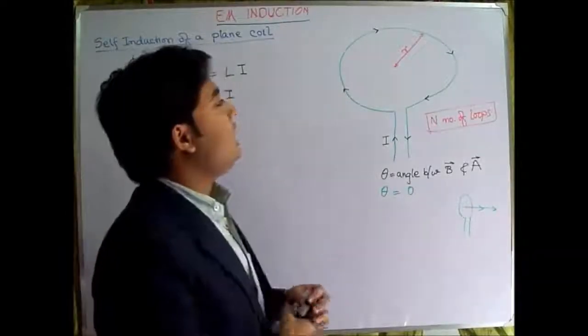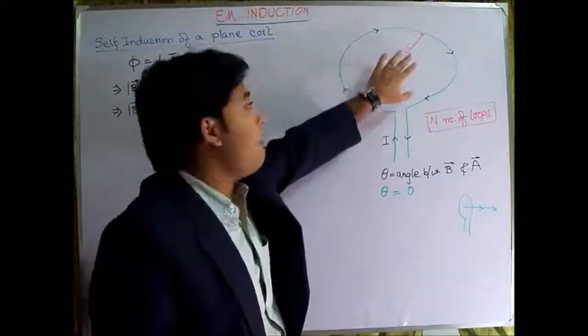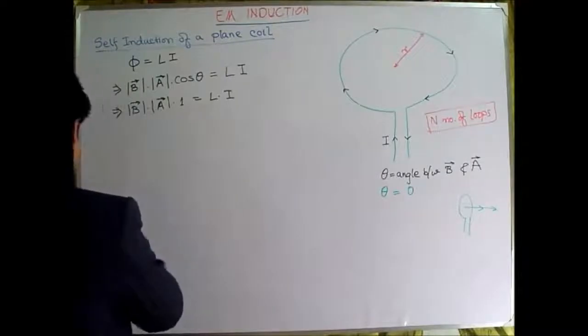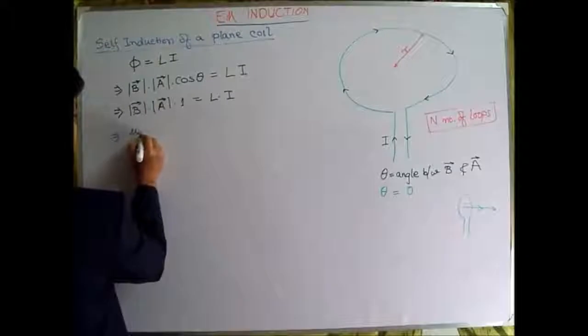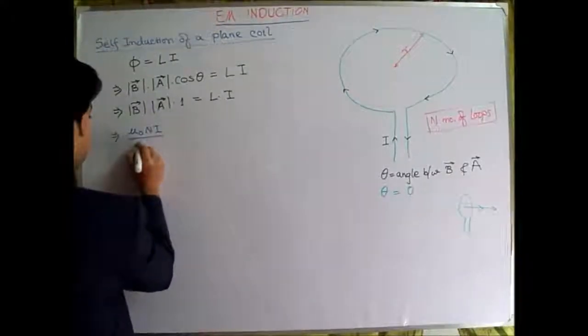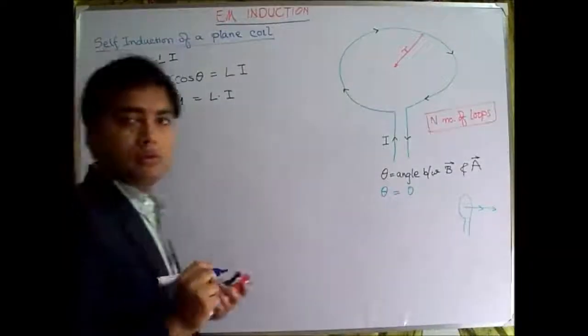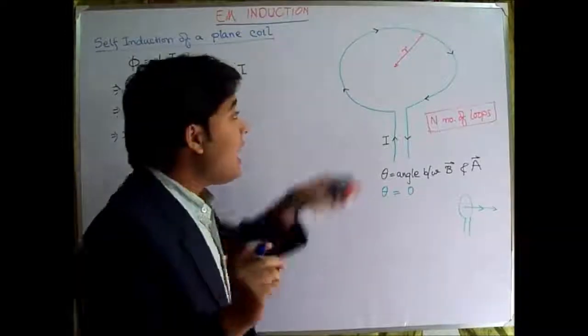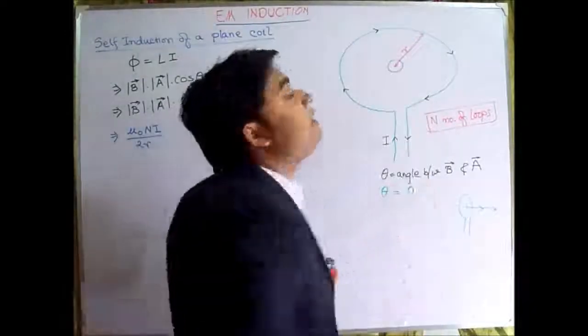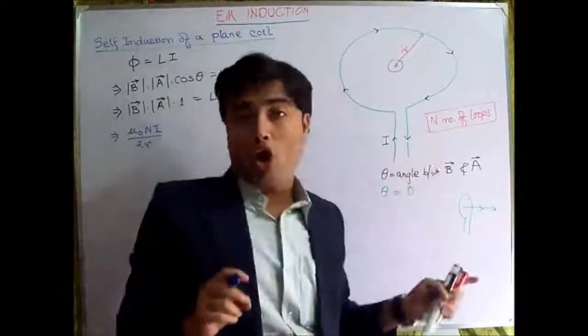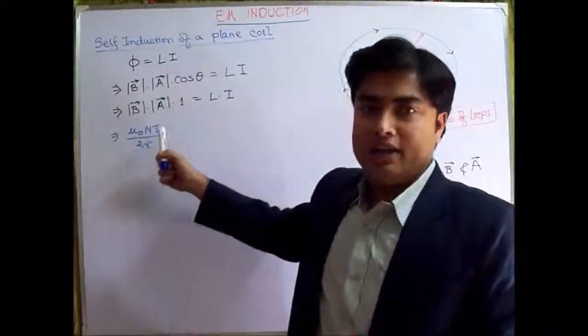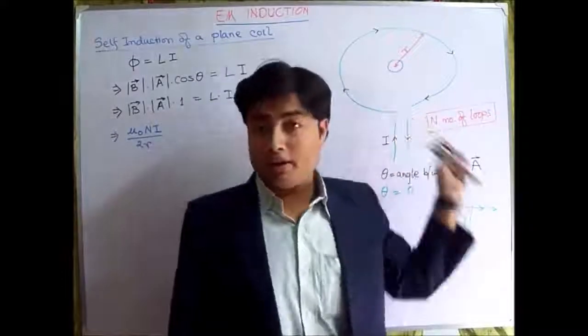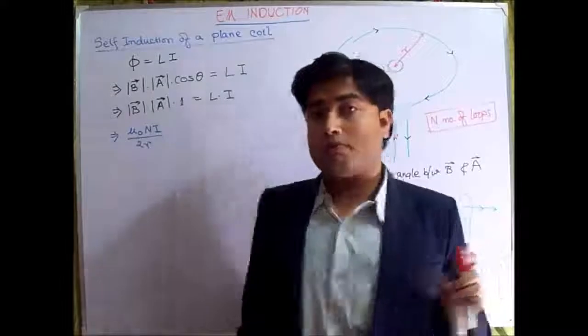Now, as we have seen in the previous chapter of magnetism, we could write the B as B = μ₀NI/2R, as we have seen that the magnitude of this B at the center of this plane coil is μ₀NI/2R, where R is the radius, I is the current that is flowing in the coil, and N is the number of loops.